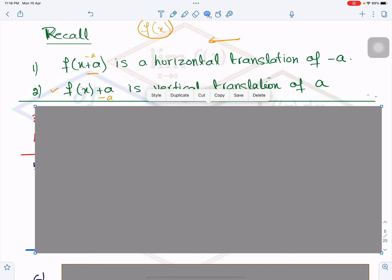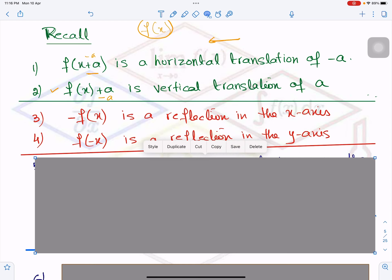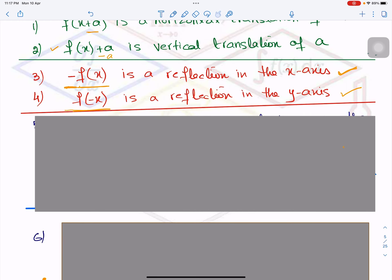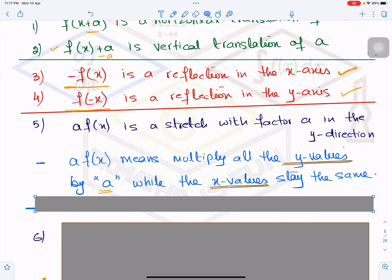Now let's see this. In this case, if it is minus times f(x), I'm talking about number 3, minus f(x), which means the original graph f(x) will be reflected in the x-axis. If it is f(minus x), then the original graph will be reflected in the y-axis. We will see number 3, I just told you in this question.